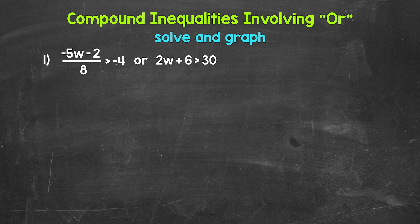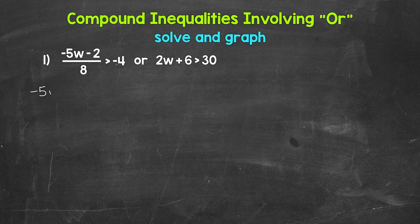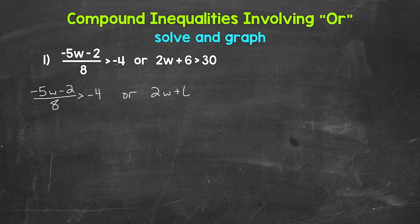Let's jump into number one, where we have negative 5w minus 2 over 8 is greater than negative 4, OR 2w plus 6 is greater than 30. When we solve a compound inequality involving OR, all we need to do is solve each inequality separately. Once we solve, we can graph the solutions on a number line.